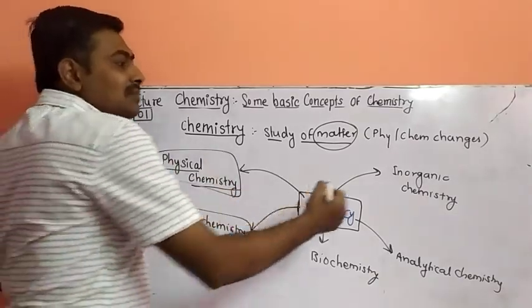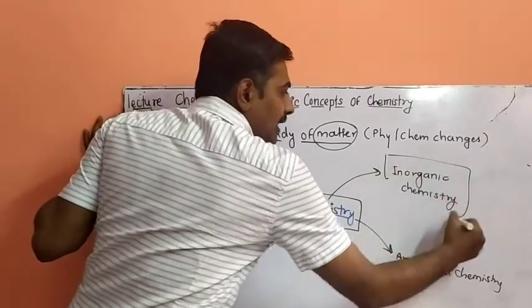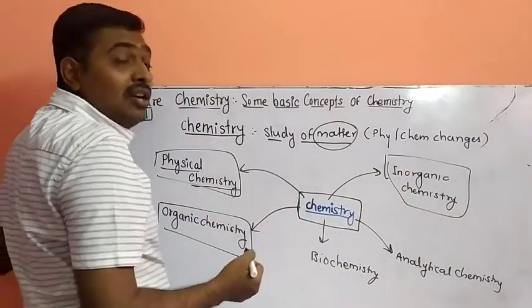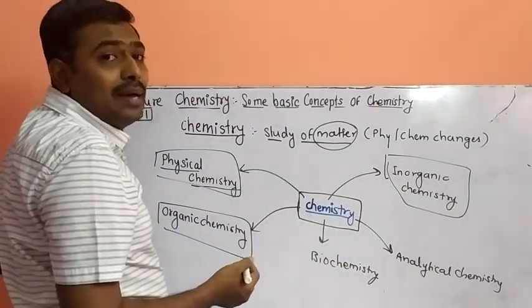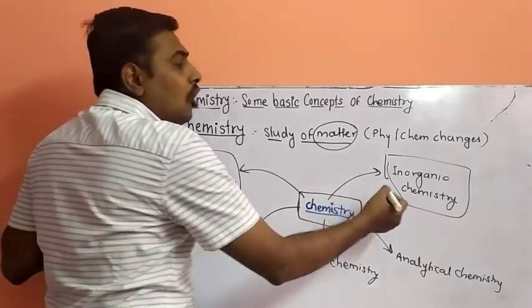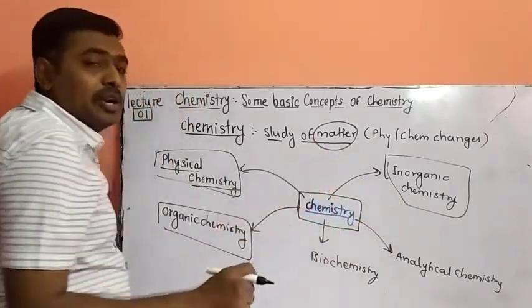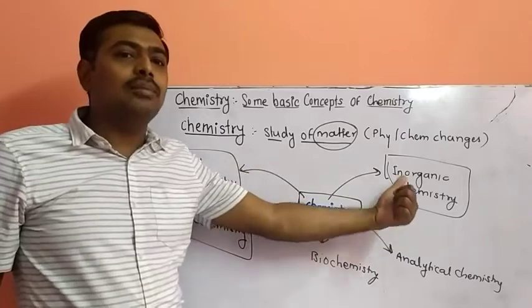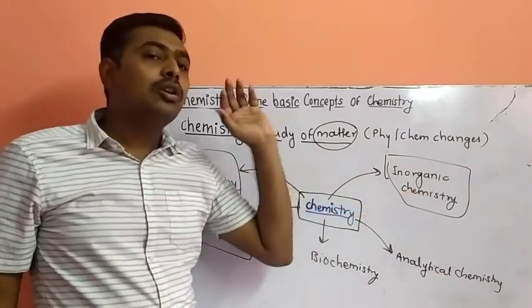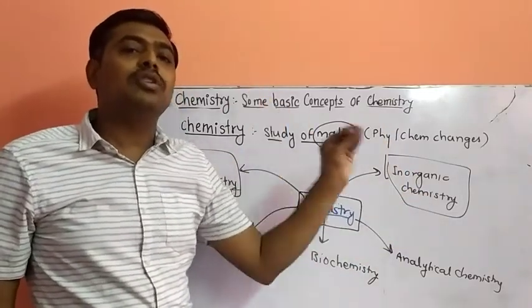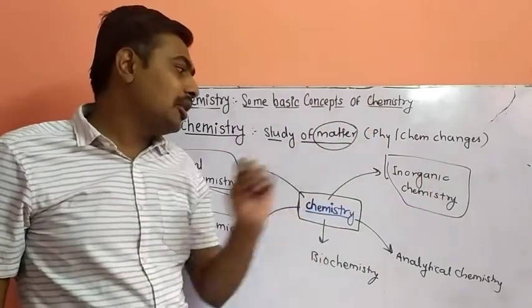Third one, what is meant by inorganic chemistry? Inorganic chemistry is study of elements other than carbon and their compounds. Other than carbon means all elements of periodic table, all elements of periodic table studied in inorganic chemistry. Not only element, but compounds of those elements are also studied in inorganic chemistry.